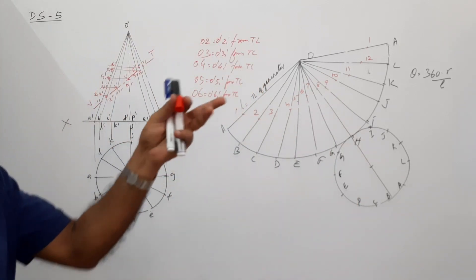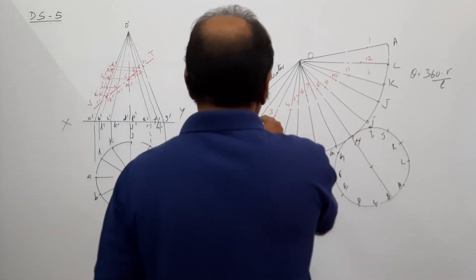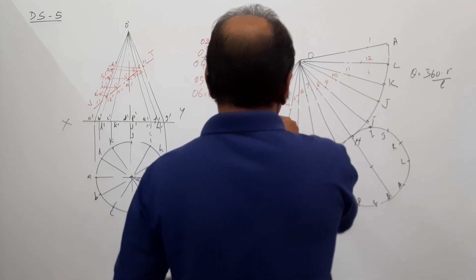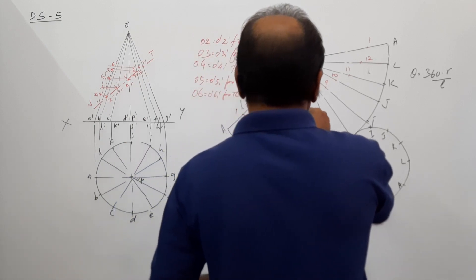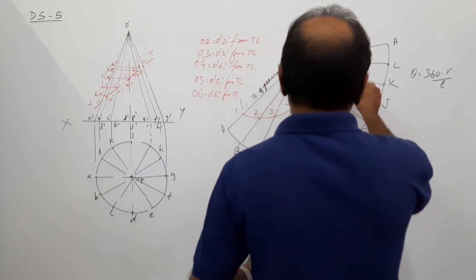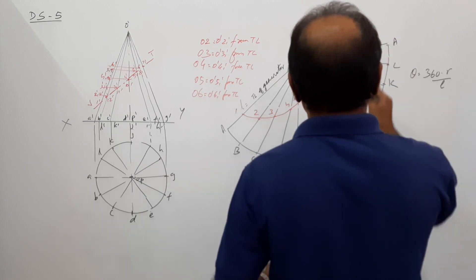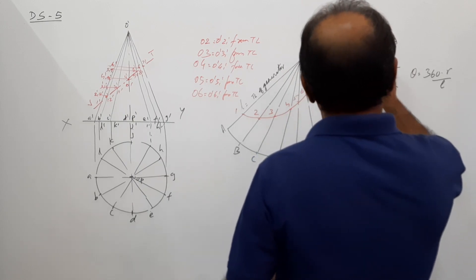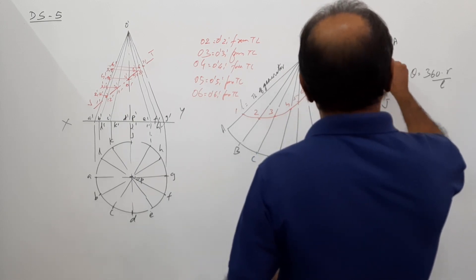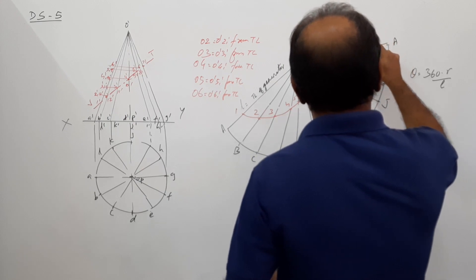Connect these points by a smooth curve through 1, 2, 3, 4, 5, 6, 7, 8, 9, 10, 11, 12, 1.